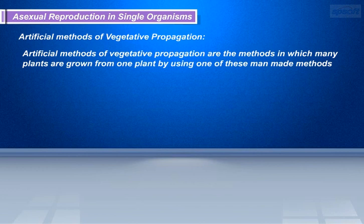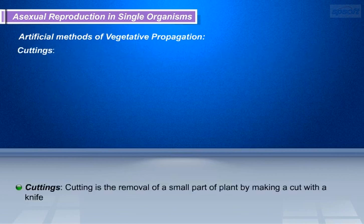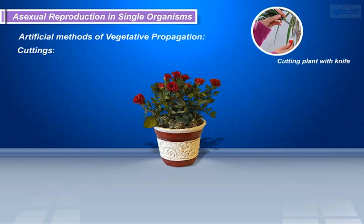Let us see the artificial methods of vegetative propagation. These are methods in which many plants are grown from one plant using man-made methods: cuttings, layering, and grafting. Let us see the process of cutting in detail. Cutting is the removal of a small part of a plant by making a cut with a knife.